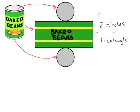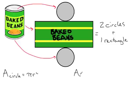So to find the surface area of the cylinder, if we add the area of the two circles plus the area of the rectangle, we'll have the surface area of the whole cylinder. We already know that the area of a circle is equal to pi times the radius squared. We also know that the area of the rectangle is equal to the base times the height.